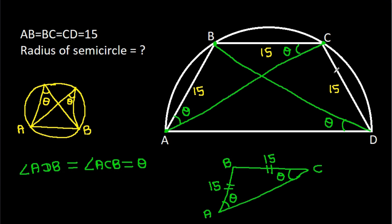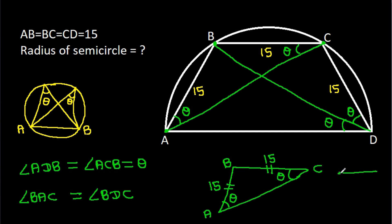So angle BDC will also be theta, since angle BAC equals angle BDC. And again, in triangle BCD, we have BC equal to CD. So these two angles will be equal, making this angle also theta.